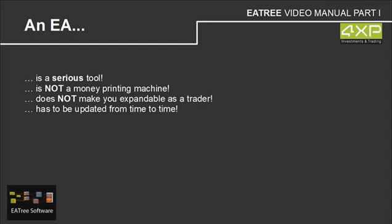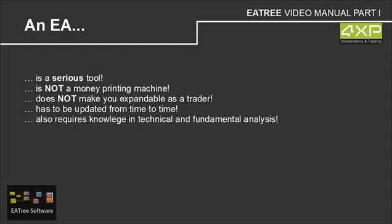You have to update your EA from time to time. After a trading day or a trading week you have to review the trades the EA has done and ask yourself what should have been better — how can I change the habits of my EA to prevent losing trades in the future. So you always have to work on it. This is why you also have to know about technical and fundamental analysis, especially technical analysis. You need to have a trading strategy in place first to feed the program with it, and that's why you have to know how this market works.